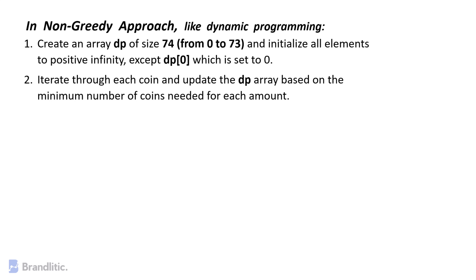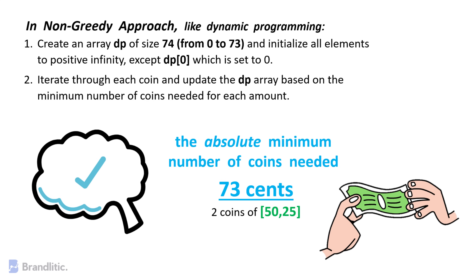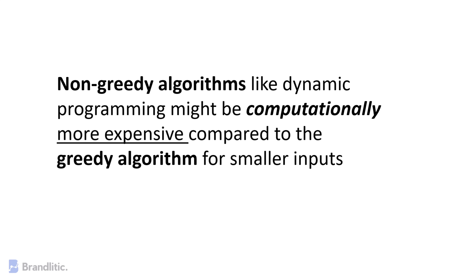By considering a non-greedy approach like dynamic programming, where we calculate the minimum number of coins for each possible amount iteratively, it will first create an array dp of size 74 — from 0 to 73 — and initialize all elements to positive infinity, except dp[0] which is set to 0. It will then iterate for each coin and update the dp array based on the minimum number of coins needed for each amount. The algorithm thinks ahead and tries different computations to find the absolute minimum, which for 73 cents would be 2 coins — 50 and 25. While dynamic programming guarantees the optimal solution, it might be computationally more expensive compared to the greedy algorithm for smaller inputs.